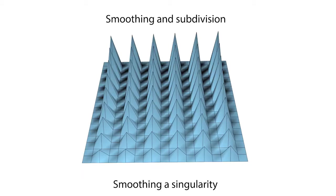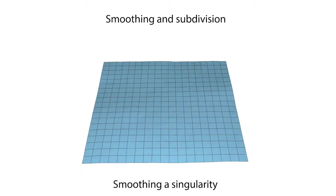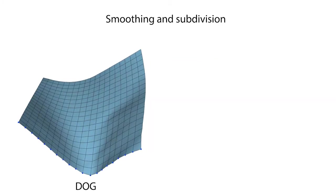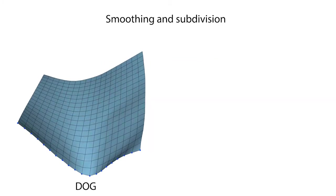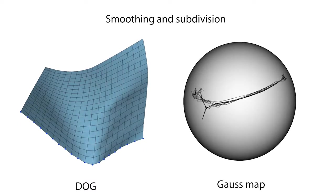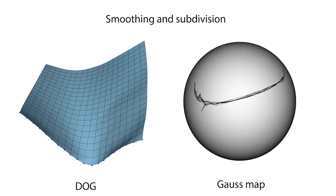Our mean curvature flow can be used for smoothing jaggy discrete orthogonal geodesic nets while staying in the shape-space of DOGS. To the right we see how the surface Gauss map changes under smoothing.